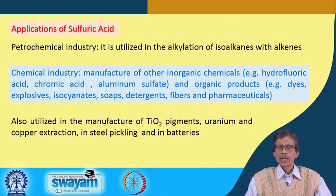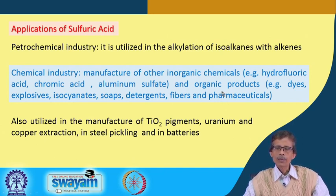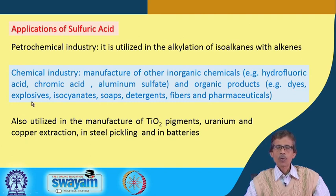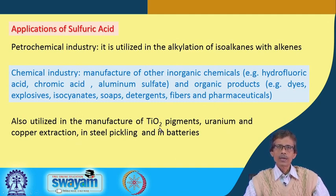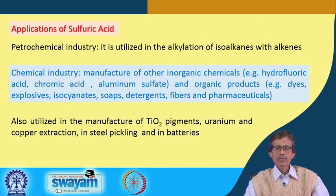Any metal salt as sulfate can be produced with sulfuric acid. Organic products also depend on it: sulfate dyes, sulfonation products, explosives, isocyanates, detergents, fibers, and pharmaceuticals all require sulfuric acid. In materials production, TiO₂ (titanium dioxide, from its ore rutile) is produced as a pigment using sulfuric acid.